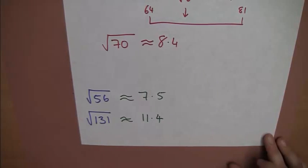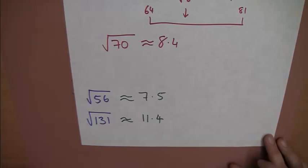The square root of 131 is roughly about 11.4. Again, if you put 11.3, 11.5, then you're in the right ballpark, and they give you the mark.